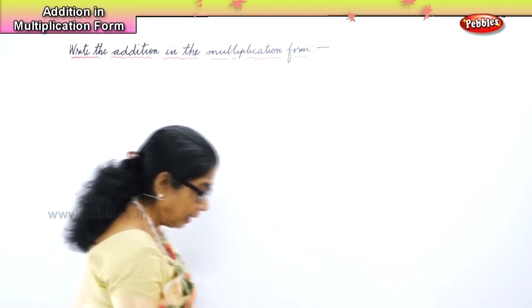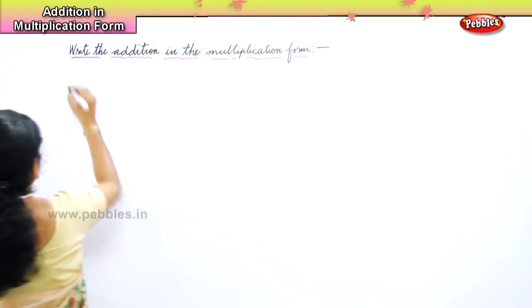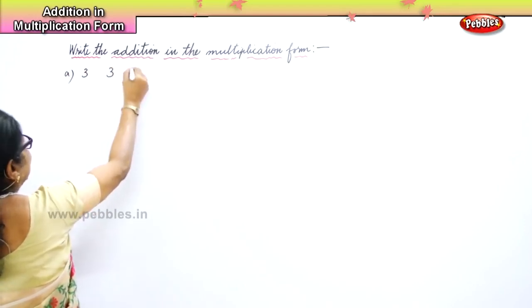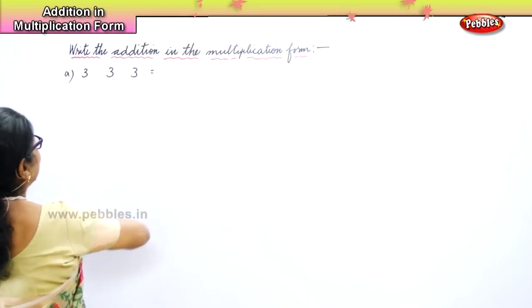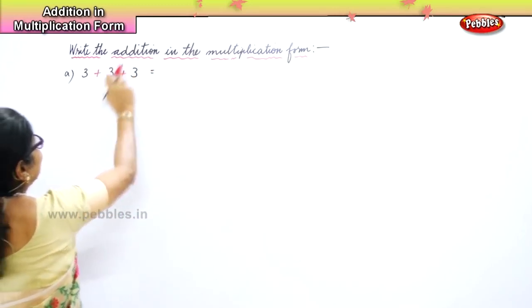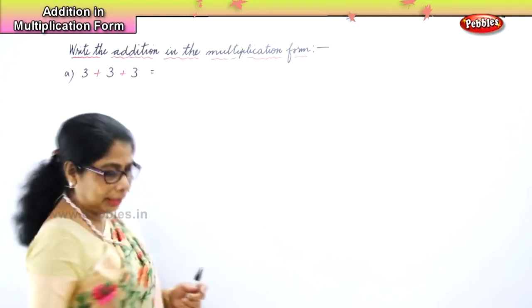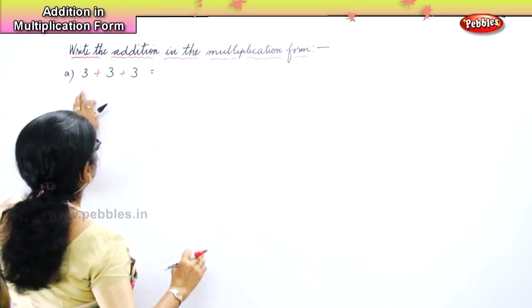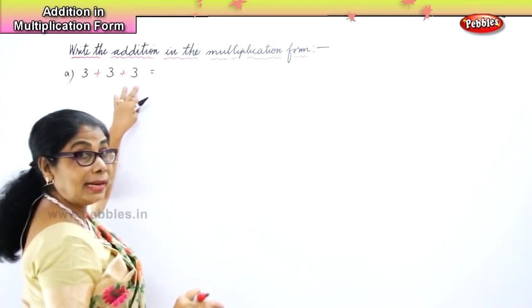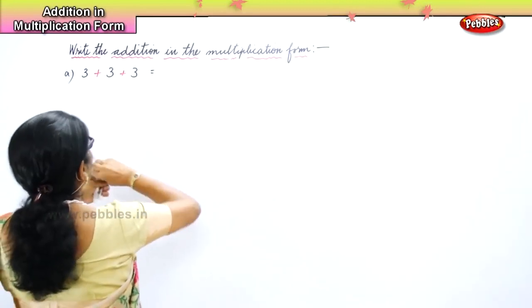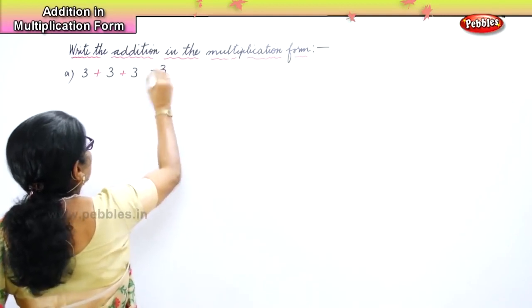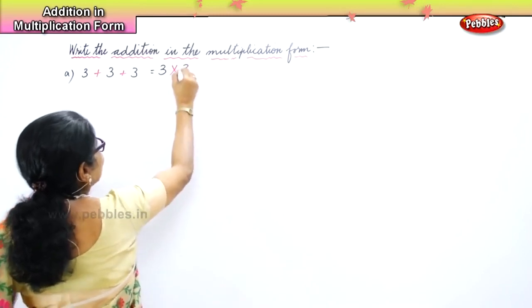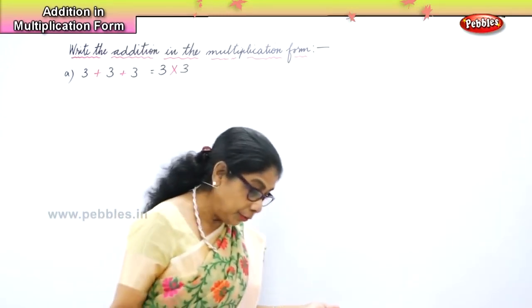So I am going to give you addition and you will learn to write it in the multiplication form. Look at the numbers I am going to give you. If I give you 3 plus 3 plus 3, write the addition in the multiplication form. 3 how many times? 3 times. So you will write 3, 3 times. That's all we need to do.